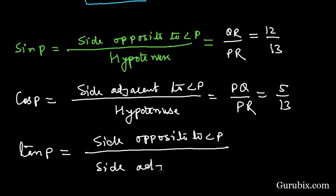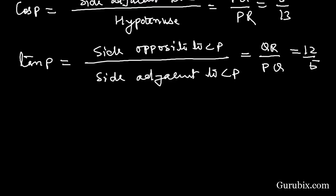This means QR over PQ, this means 12 over 5. So this is the solution of the question.